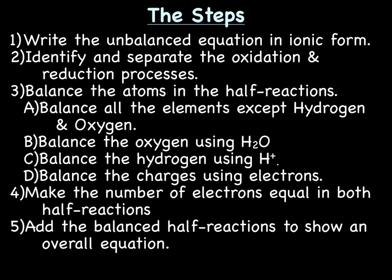First, you're going to balance all of the elements except for hydrogen and oxygen. Then you're going to balance oxygen using water. Then you're going to balance the hydrogen using hydrogen ions, or H1+. Then you're going to balance the charges using electrons. Step four: make the number of electrons equal in both of the half reactions. And the last step is to take all the work you've done and put the two half reactions back together to show the overall equation.